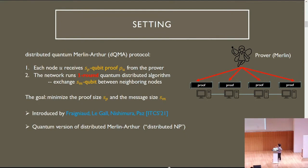We define the distributed quantum Merlin-Arthur protocol. The protocol has two phases. In the first phase, each node u receives sp qubit quantum proof from the prover. In the second phase, the network runs a one-round quantum distributed algorithm, where each node can exchange sm qubit information between its neighboring nodes. The main complexity measures are proof size sp and message size sm.